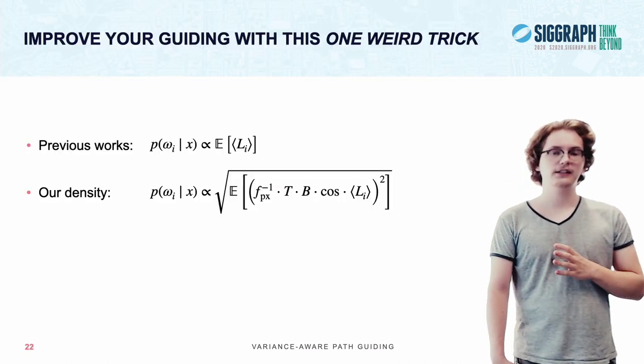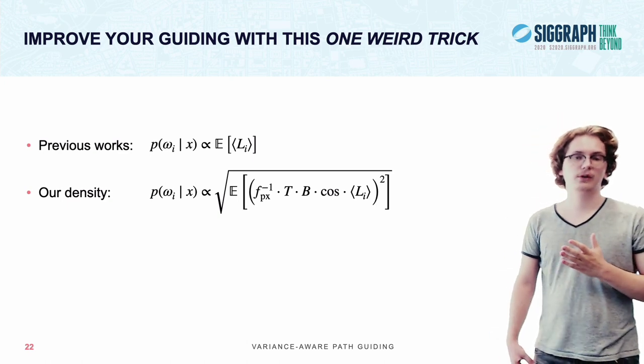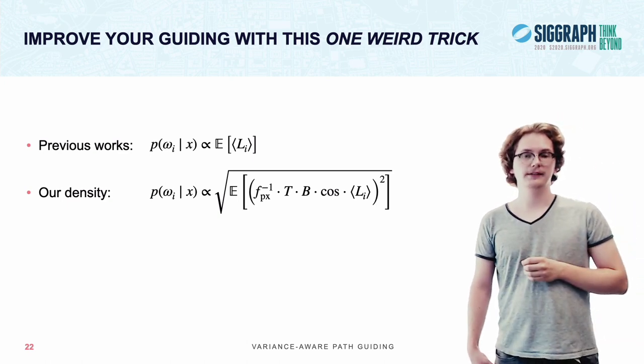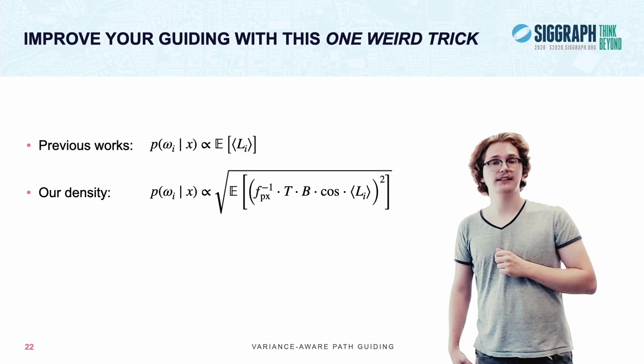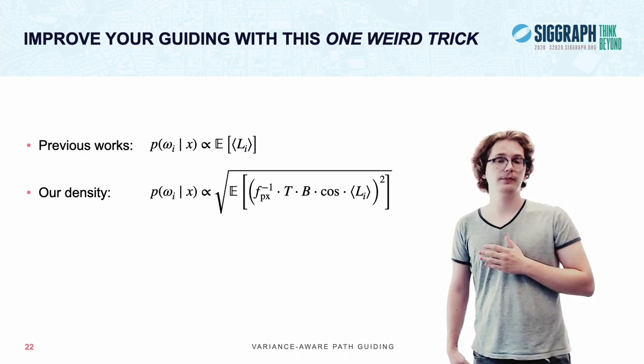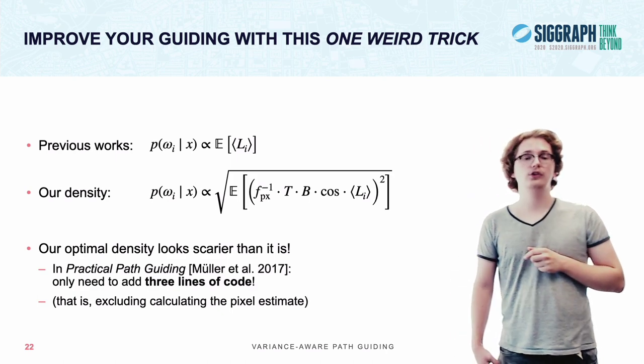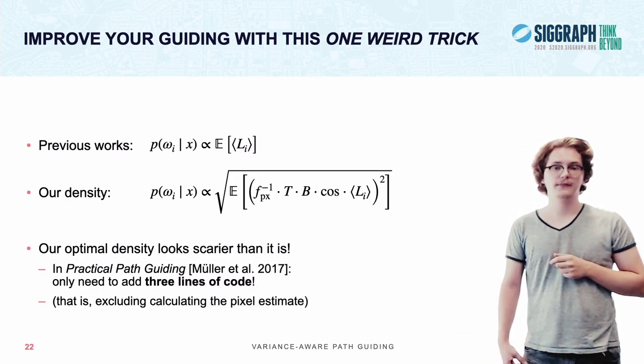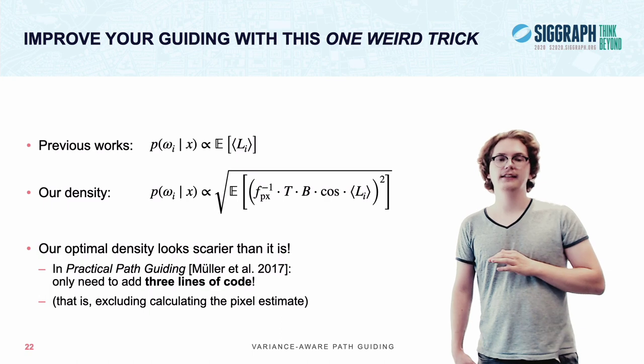Now, with all of these factors, you might think that our distribution is probably very hard to implement. But that's not actually the case. For example, in the practical path guiding codebase, it only takes three lines of code to implement our distribution.